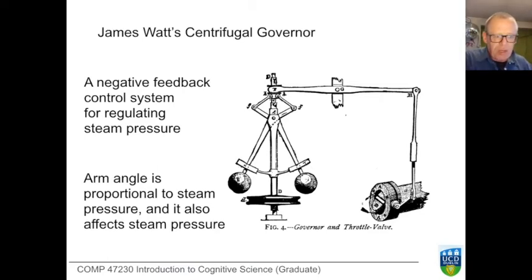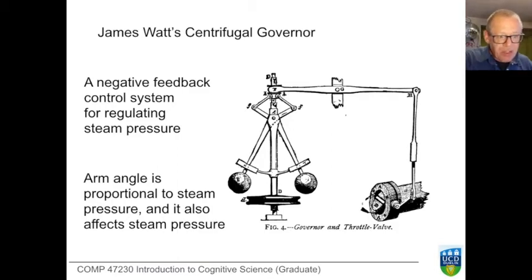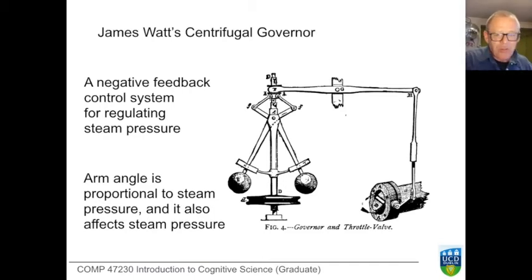We're going to begin with a worked example of a system which we understand in full. This example comes from the early days of steam engines. James Watt, famous inventor of the steam engine, introduced a device for controlling the steam pressure within his system called a centrifugal governor.